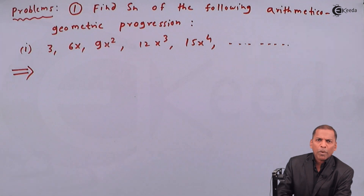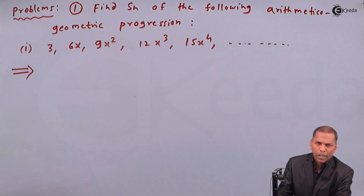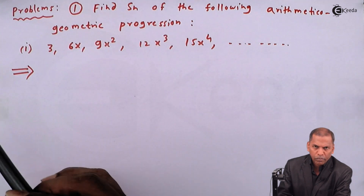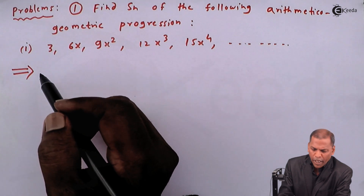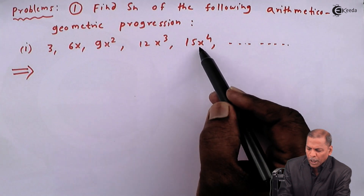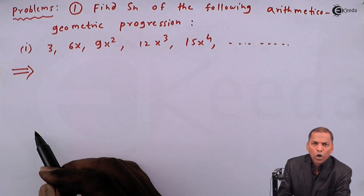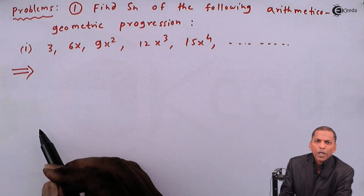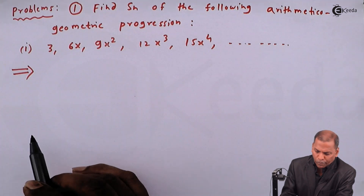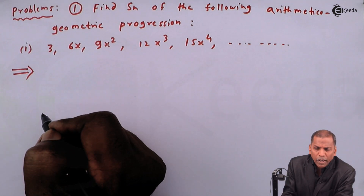Hello friends. Now we see problem number one, which is based on mathematical geometric progression of chapter sequence and series. The problem is to find S_n of the following arithmetic or geometric progression. Sub-question one gives the terms: 3, 6x, 9x², 12x³, and 15x⁴. For this arithmetic-geometric progression we have to find S_n, that is the sum of first n terms.